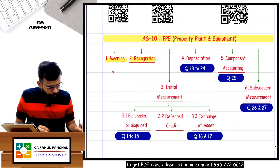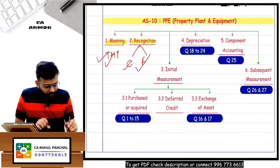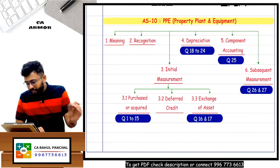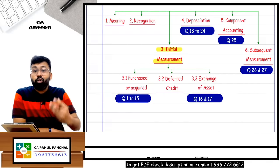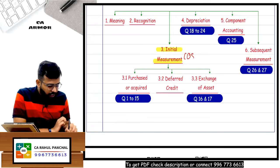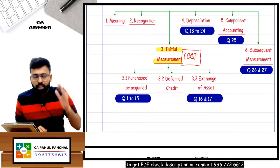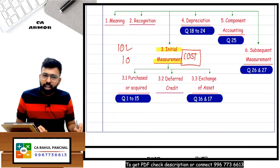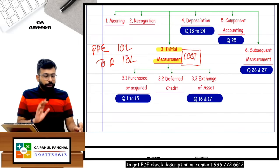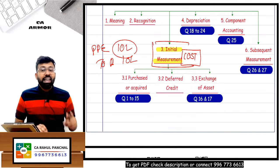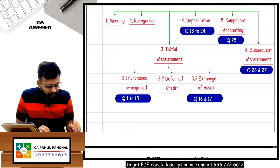Recognition criteria: PPE must be tangible, held for use, life more than one period. Recognition requires cost measurement and future economic benefit flowing to the entity. When you record it in your books of account, it will be recorded at what value? Initial recognition is done at cost. If you bought a delivery van for 10 lakh rupees, you record: PPE account debit to bank account. PPE is recorded at cost in the initial stage.